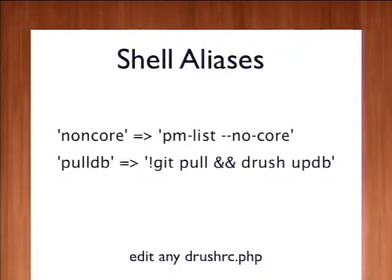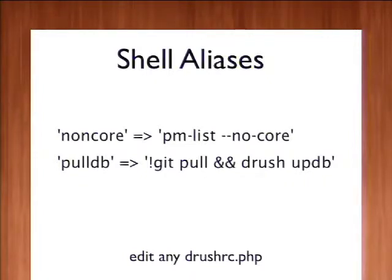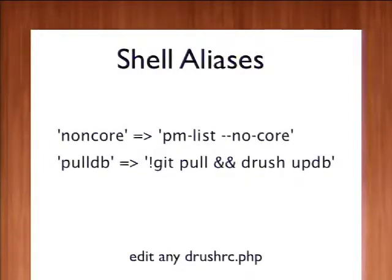The second example is running a little bash fragment straight out of Drush. Here we're running git pull, and if that succeeds, we're running Drush update DB. So this doesn't just work for Drush commands — it's any bit of bash that you want to put on the right-hand side; you can make it accessible as if it was a Drush command.